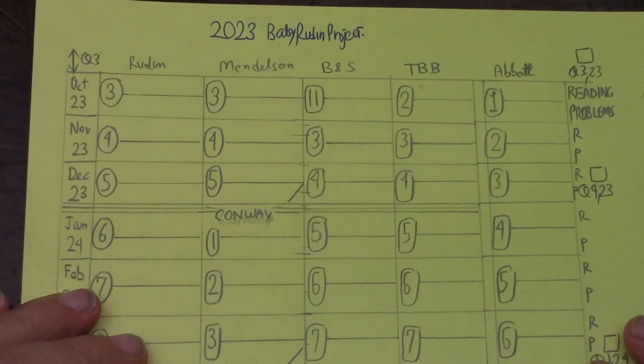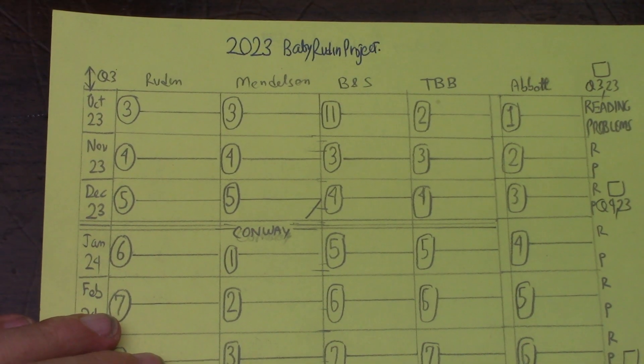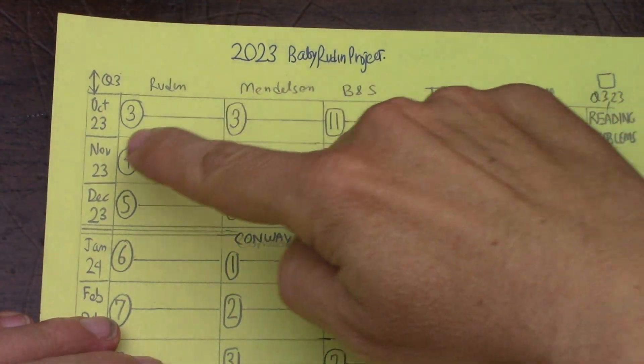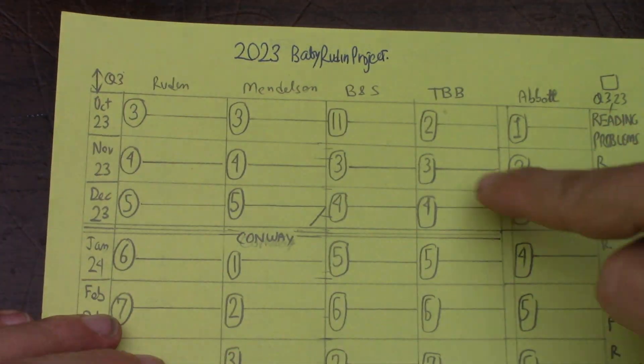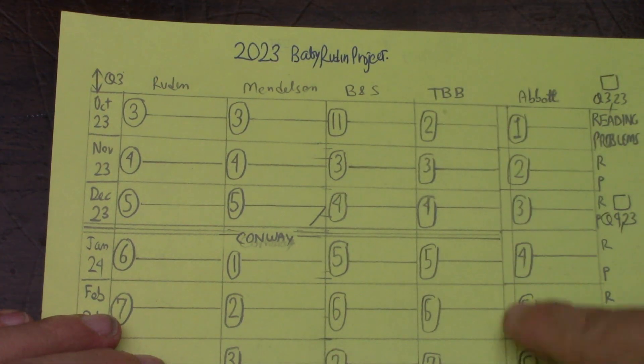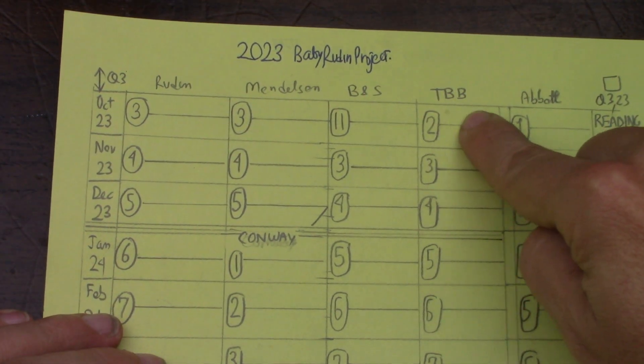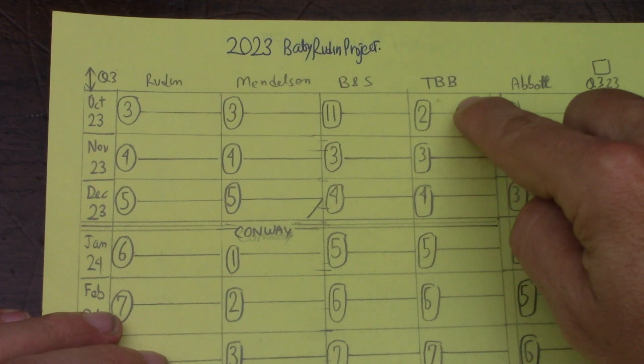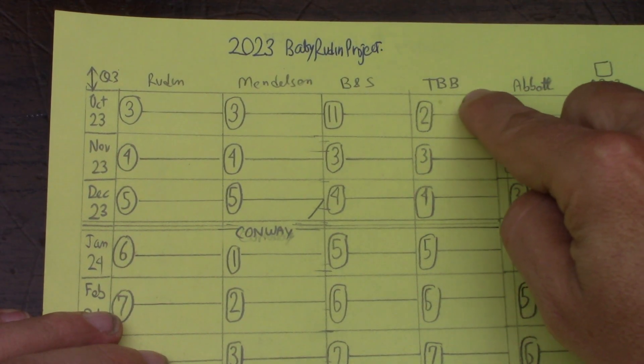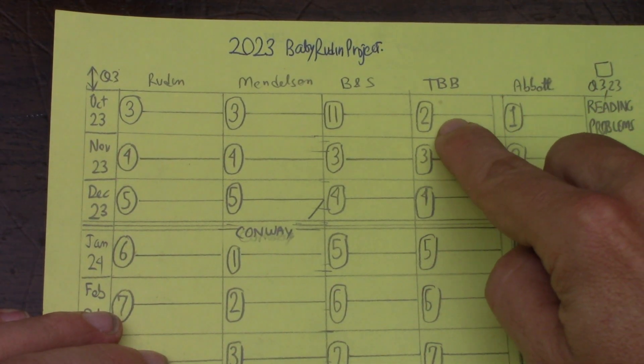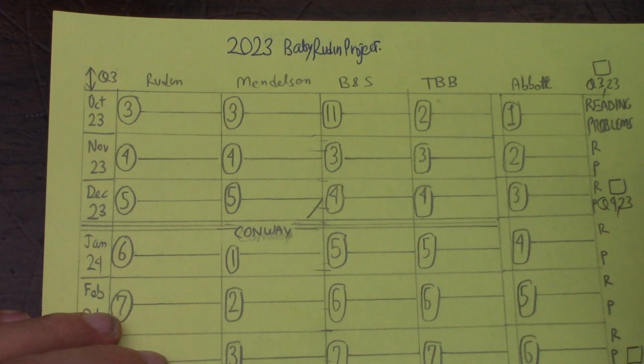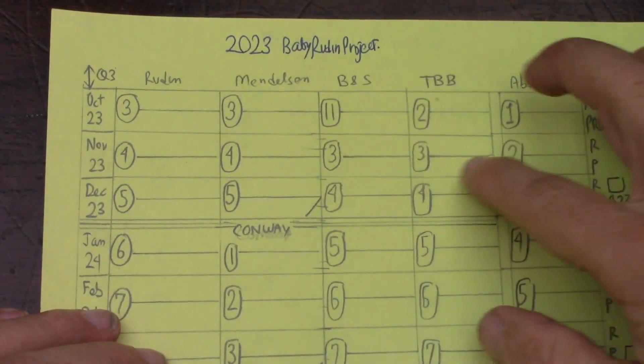And so what I think I'm going to do is just lay out, by month, the chapters in each of these books that I want to complete. And then, in each little cell, I have put in two cells. One, the first one is for when I finish reading that chapter. The second one is when I do all the problems that I thought I was going to do for that chapter.